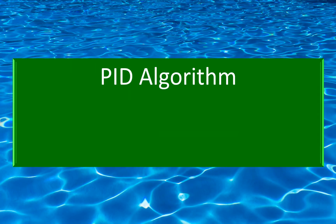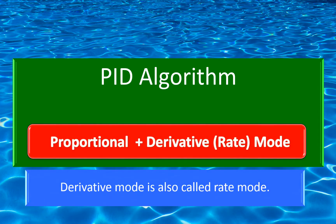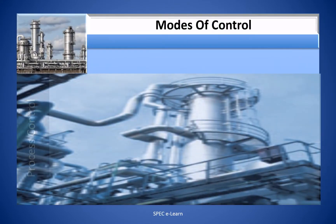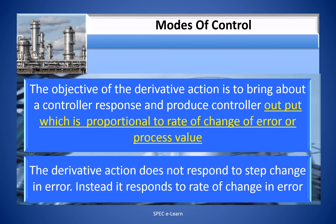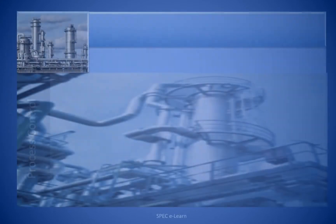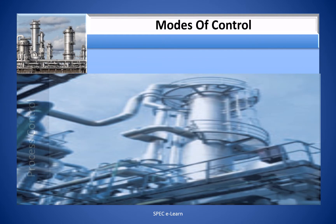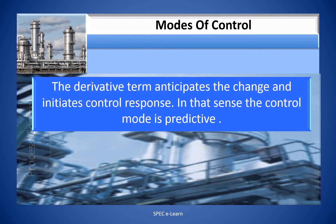Proportional plus Derivative Mode — Derivative is also called Rate Mode. The objective of the derivative action is to bring about a controller response and produce the controller output which is proportional to the rate of change of error or process value. The derivative action does not respond to a step change in error; instead, it responds to the rate of change in error. The derivative term anticipates the change and initiates control response — in that sense, the control mode is predictive.